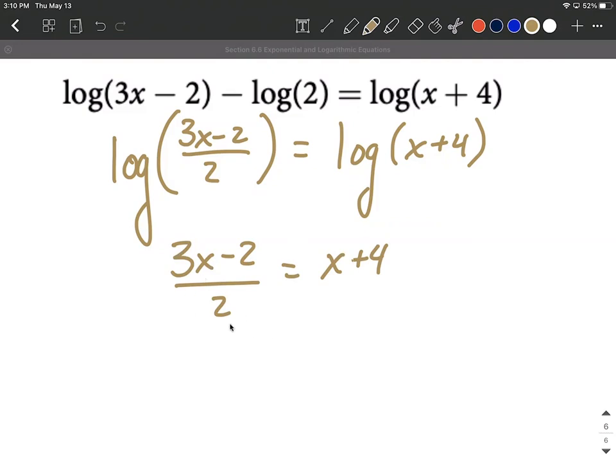Well, to solve this I don't like fractions and most of you probably don't either. Let's go ahead and try to get rid of this fraction by multiplying both sides by 2. So let's multiply the entire left side by 2 and the entire right side by 2. This will leave us with 3x minus 2 equals, and with a little distributing on the right hand side, we get 2x plus 8.